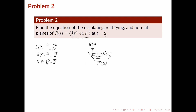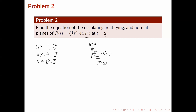For the rectifying plane, which contains t and b, we again take the point r(2), and the vector perpendicular to that plane is n(2), the unit normal vector. Similarly for the normal plane, we take the point r(2) and the normal vector to that plane is t(2), the tangent vector. So this tells us we need to solve for the tangent, normal, and binormal vectors.